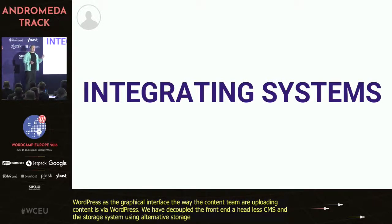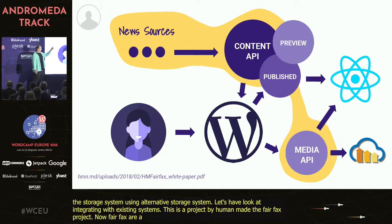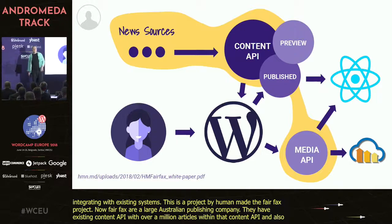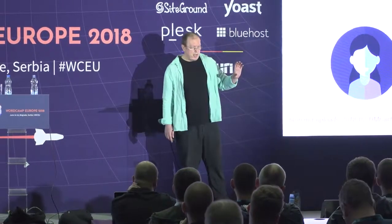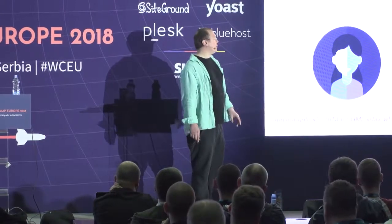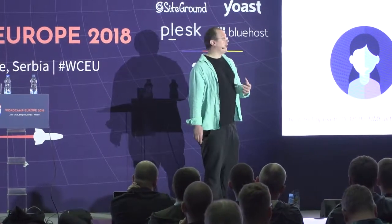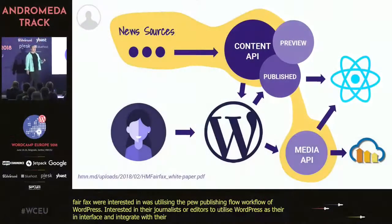Let's look at integrating with existing systems. This is a project by HumanMade — the Fairfax project. Fairfax is a large Australian publishing company with an existing content API containing over a million articles, and an existing media API with well over a million multimedia entries, connecting to Cloudinary for image storage. What Fairfax wanted was to utilize WordPress's publishing workflow — for their journalists and editors to use WordPress as their interface while integrating with their existing content and media APIs.